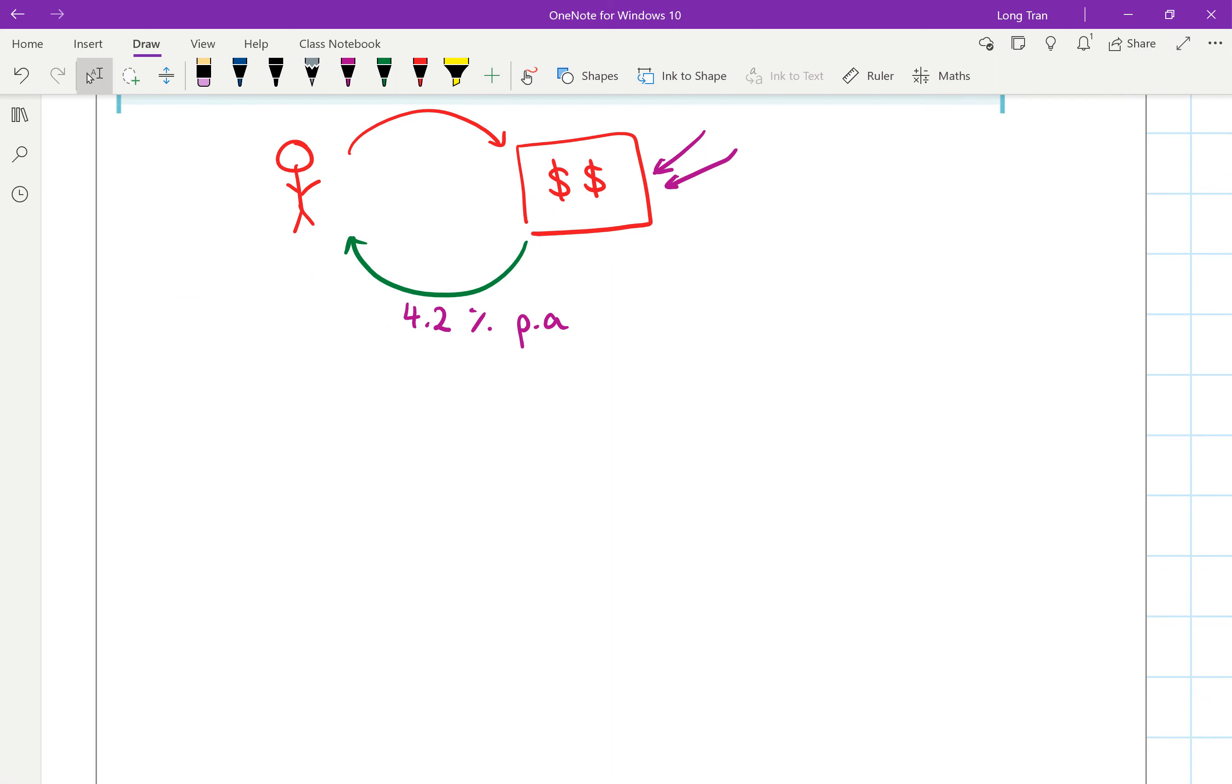We can work backwards here because normally to find the interest amount that they pay you per month, you would say 4.2% of whatever the amount you had, so I'm just going to do the dollar sign, and that will give you the monthly repayment.